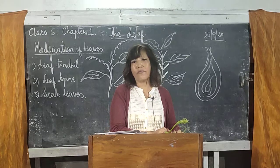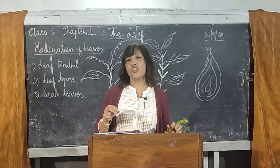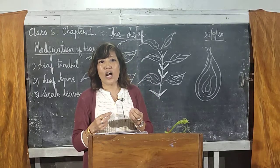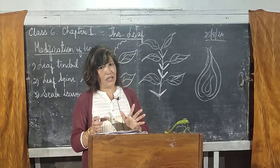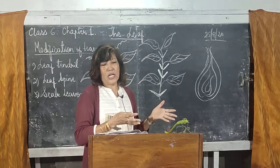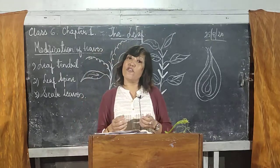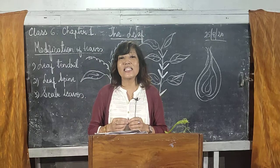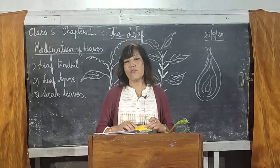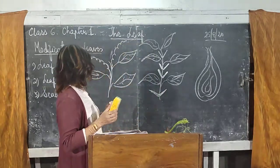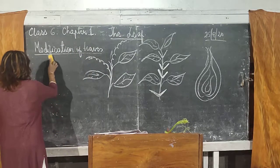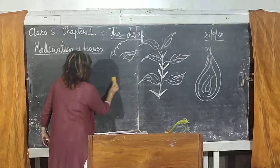Another example of scale leaves is ginger. In the case of ginger, the scale leaves are dry and thin. This is the modification of leaves in normal plants. Now we are going to discuss the modification of leaves in insectivorous plants.